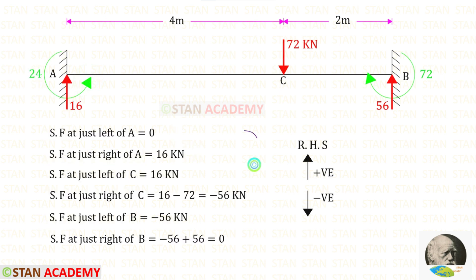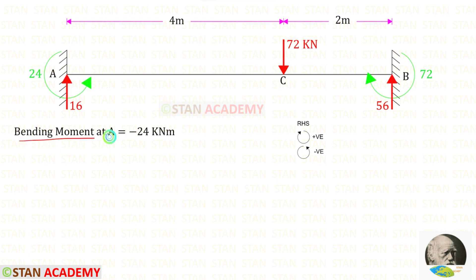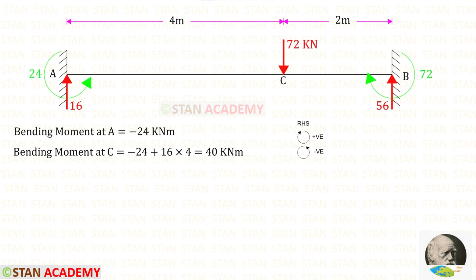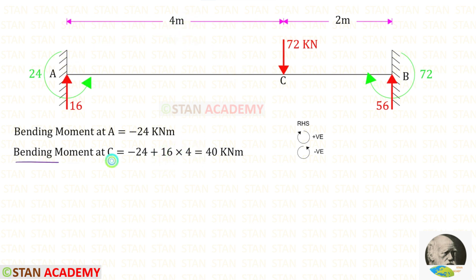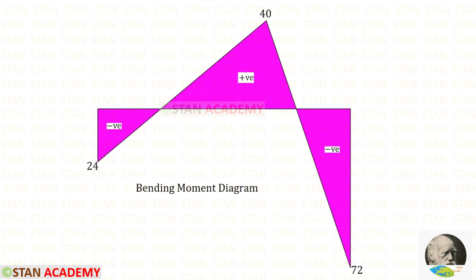Here you can see the shear force calculations and the shear force diagram. Now let us find the bending moment at point A. At point A, we have MA acting in the anti-clockwise direction, so it will be negative. Now let us find the bending moment at point C. MA is acting anti-clockwise (negative) and RA is acting in the clockwise direction (positive) with distance 4. For the bending moment at C, we get 40 kNm. To find the bending moment at point B, we use the left-hand side rule. At point B, MB is acting in the clockwise direction, so it will be negative. Here you can see the bending moment diagram.